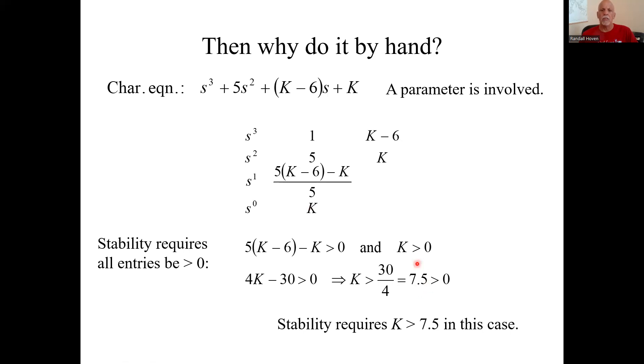Now, what if it's exactly equal to 7.5? You'll get one here, a five here, a zero here, and a 7.5 here. Three positives but a zero. Well, a zero in that column means at best marginal stability.